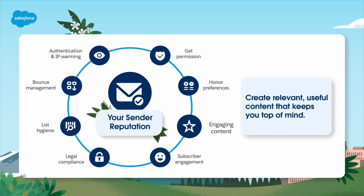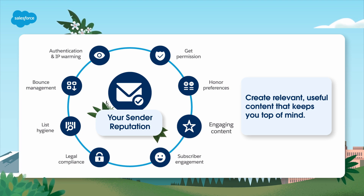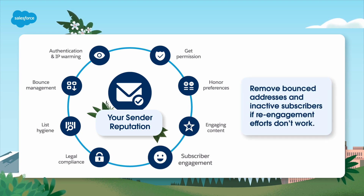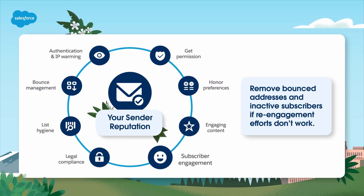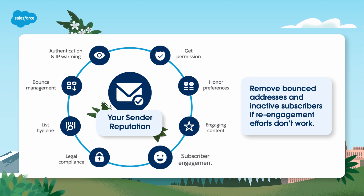Engaging content — create engaging content. Send relevant, useful content that keeps you top of mind and reminds subscribers why they asked to hear from you in the first place. Subscriber engagement — maintain active subscriber engagement. Remove bounced addresses. Segment inactive subscribers onto a list and feed that list into a re-engagement campaign. If there is still no activity once that campaign ends, remove those email addresses.